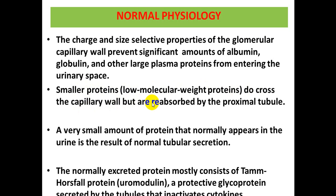These smaller proteins will be reabsorbed by the proximal convoluted tubules. A very small amount of protein that normally appears in the urine results from normal tubular secretion, mostly consisting of uromodulin and protective glycoprotein.